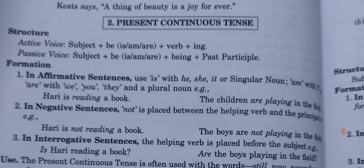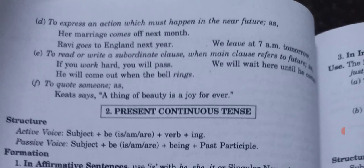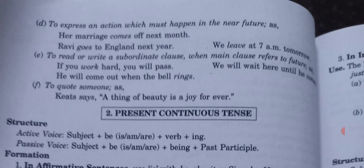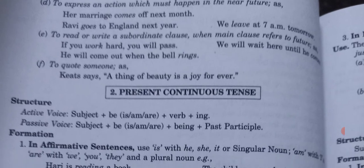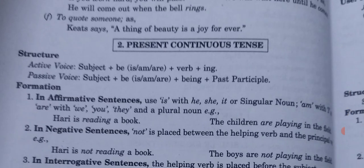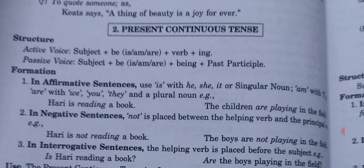We also use present indefinite to quote someone — for example, 'A thing of beauty is a joy forever.' Now, present continuous tense: the structure is subject plus is/am/are plus V1 plus -ing.